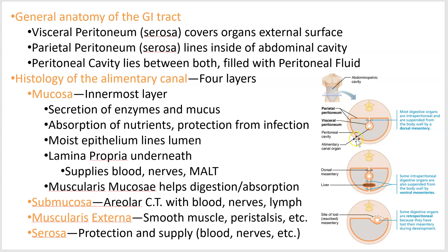You've seen these serous layers before. The thing in the center of the image is your digestive tract — your stomach, intestine, esophagus, and so on. Around it are serous layers: a parietal layer which lines the body wall, and a visceral layer which lines the tube itself. For digestive system organs, these are called the peritoneum. The visceral peritoneum wraps around the organ, the parietal peritoneum lines the inside of the body wall, and in between lies peritoneal fluid.